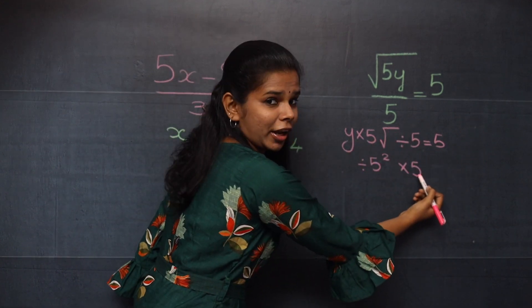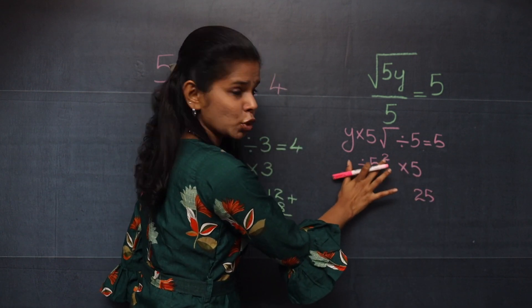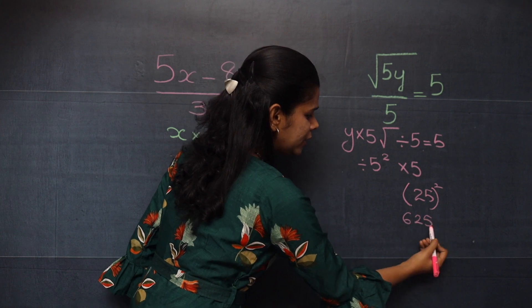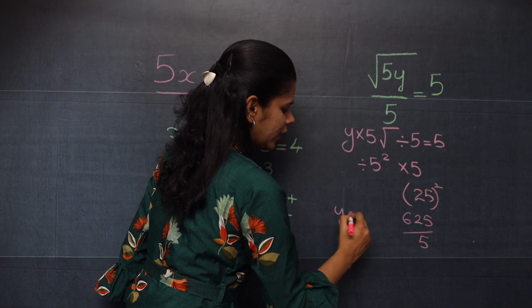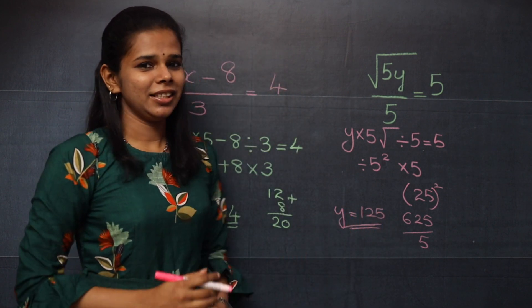5 into 5, it is 25. 25 square, it becomes 625. 625 divided by 5. So y is equal to 125 is the answer. I hope this trick was useful for everyone.